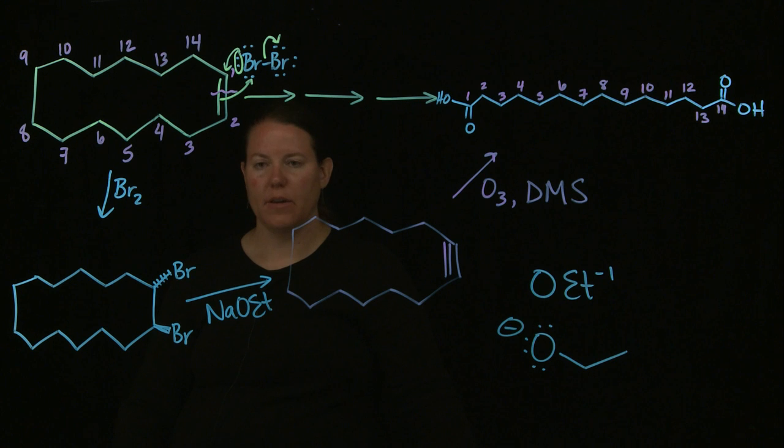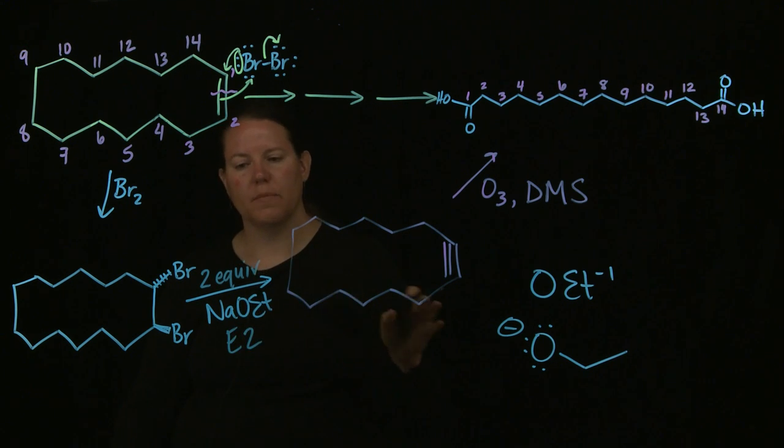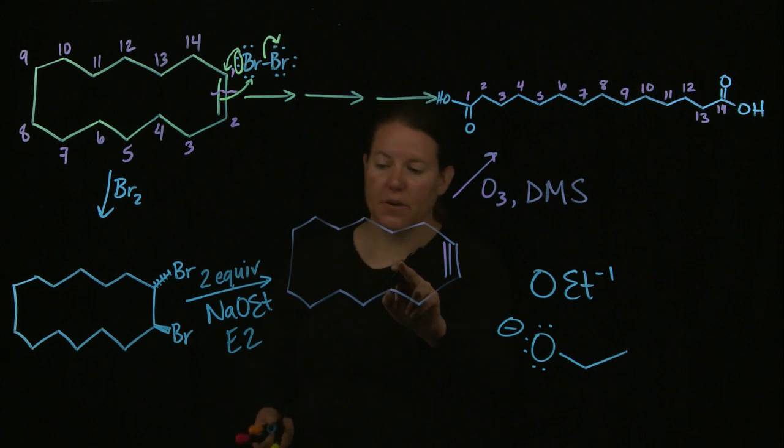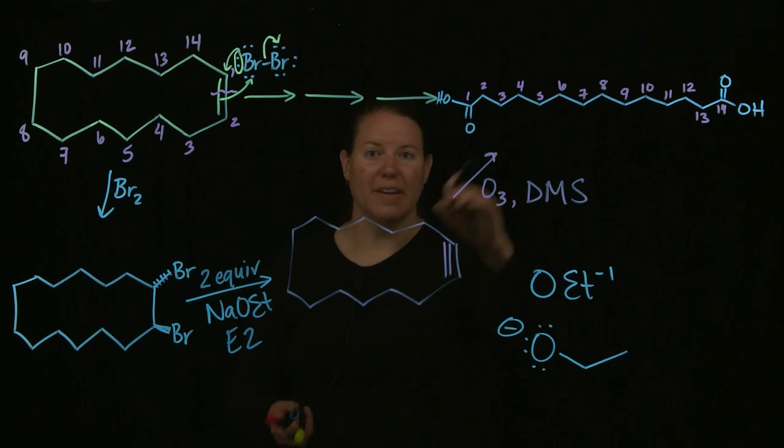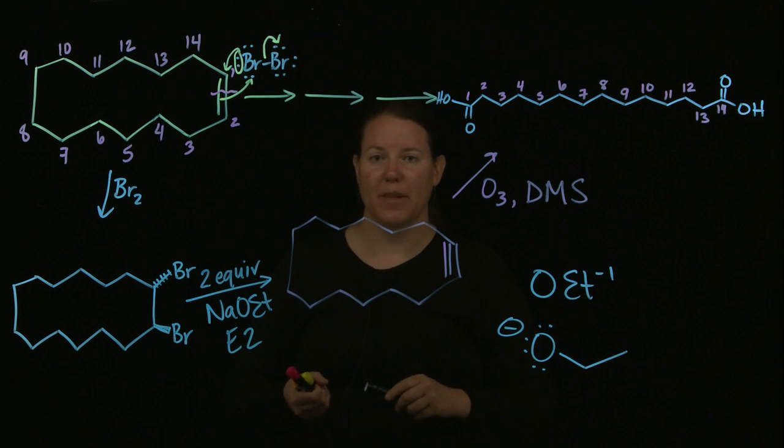So what essentially is going to happen here is I'm going to undergo two E2 reactions. I'm going to take off one of those Brs, make it into an alkene, take off another Br, make it into an alkyne. And then once I get to the alkyne stage, I can use my ozone reaction to get to the two carboxylic acids on either side and breaking up the chain.